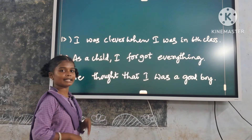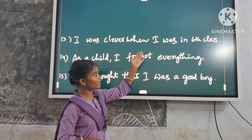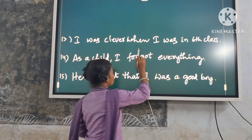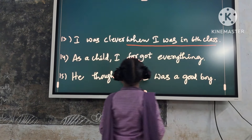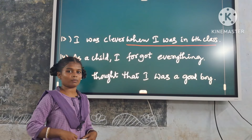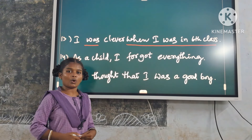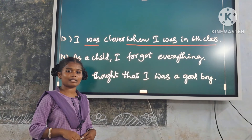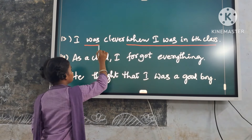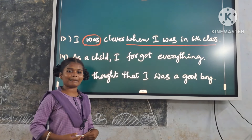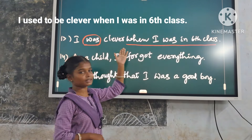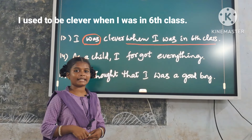Thirteenth example: 'I was clever when I was in sixth class.' Here, 'when I was in sixth class' is a time expression. But the verb in the main clause is a stative verb — that is, the 'be' form. So we use only 'used to'. Replace it with 'used to be'. Answer: 'I used to be clever when I was in sixth class.'